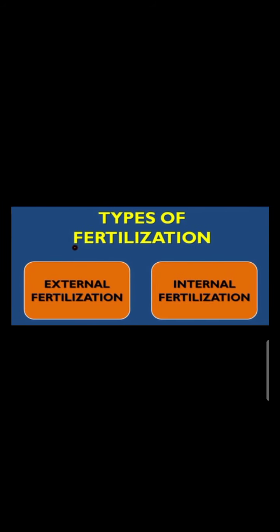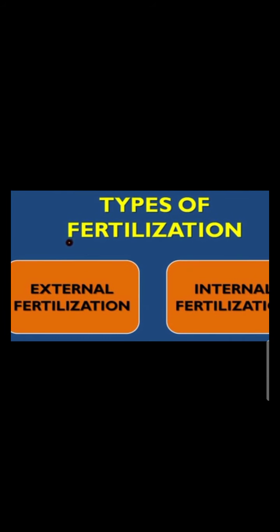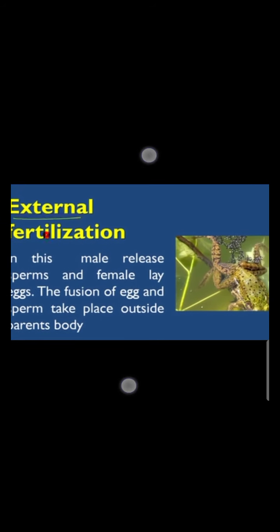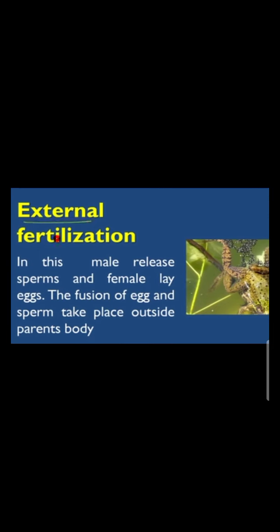Fertilization occurs in two types: external fertilization and internal fertilization. External fertilization means the fertilization occurs outside the body, and internal fertilization means it takes place inside the body. In external fertilization, the male releases sperm and the female releases eggs, and the fusion of egg and sperm takes place outside the parent body. Here you can see the picture of a frog — the sperm and ovum are released outside the body and fertilization takes place outside.